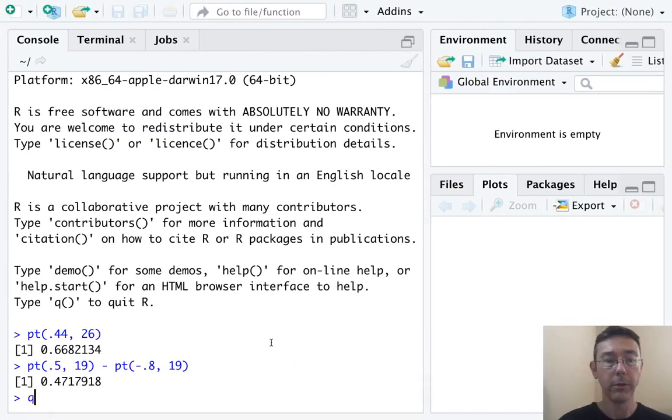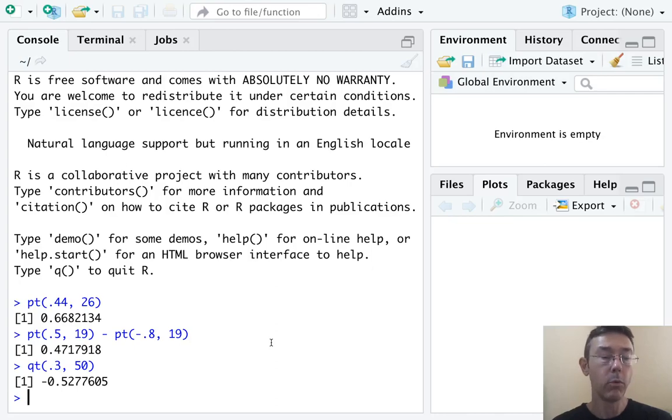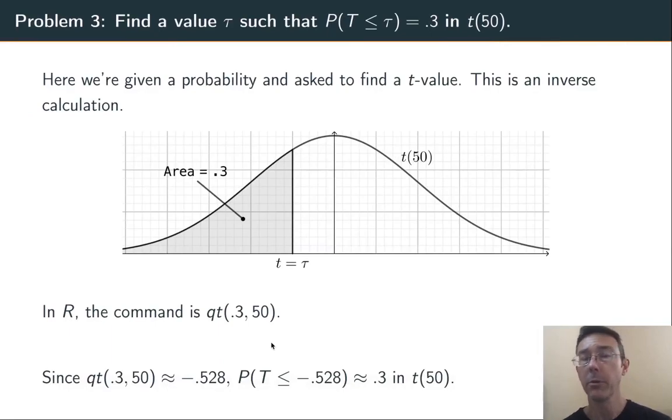So, let's swipe over to R and do the Qt command, 0.3, 50. We get negative 0.5277. And that's perfectly reasonable that we would get a negative number here. We expect it to be less than 0.